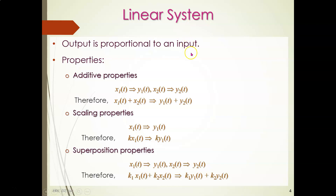A linear system must fulfill all these properties. The first is the additive property. Let y1 correspond to the output of the system with input x1, and y2 correspond to input x2. For the additive property, x1 plus x2 must correspond to the output y1 plus y2.